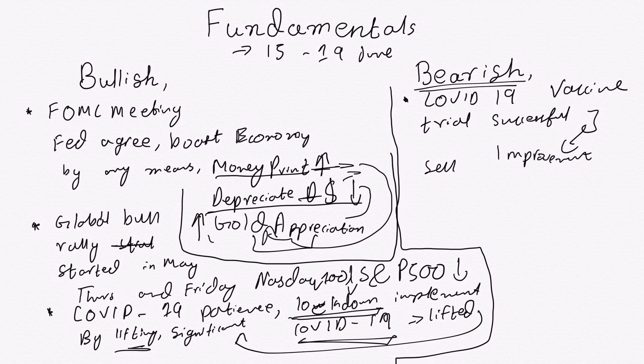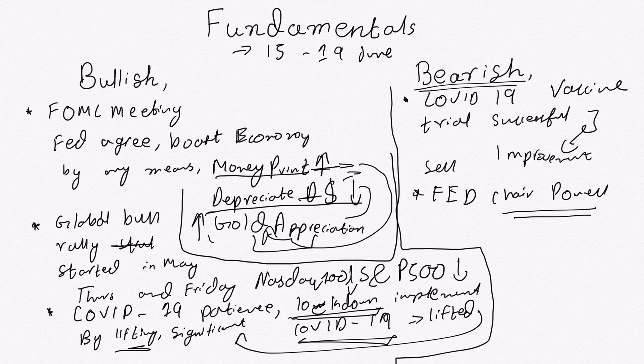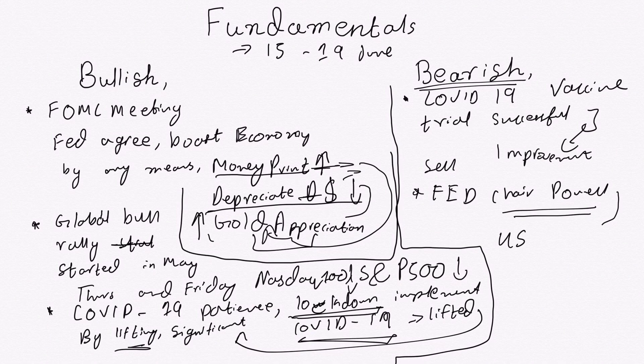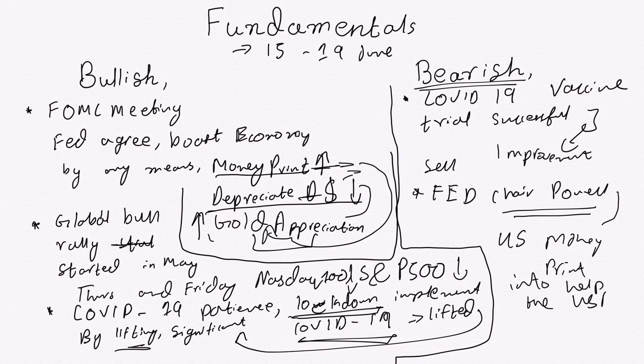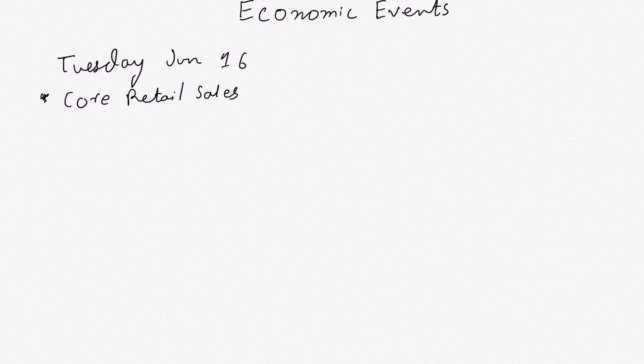Moreover, in the coming week, we are having many data releases which includes the Fed chair who will speak. That would be an important and crucial event to be watched whether he supports the US economy further or we are seeing a decrease in money printing in order to help the US dollar. Now, coming to the economic calendar, I'll tell you how we should trade the economic events for gold in the coming week and how we should adjust our positions. On Monday, we do not have any economic event.